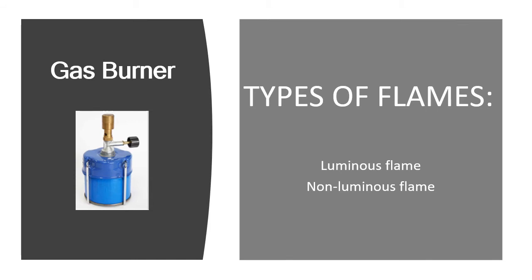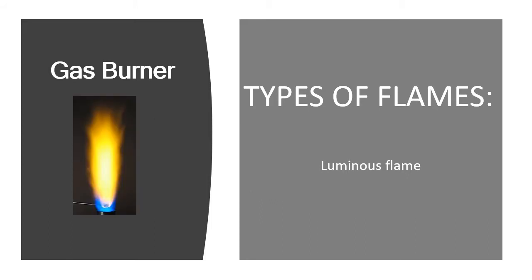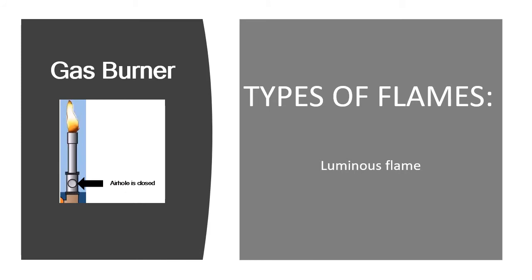The gas burner produces two kinds of flame: the luminous and the non-luminous. Luminous flame means producing or reflecting light, especially in the dark, according to the American dictionary. It is a yellow to orange flame, also called a safety flame as it is easily seen. This type of flame is unsteady, produces soot when in contact with other objects, and is considered a hot flame. It is produced when the air hole of the gas burner is closed.